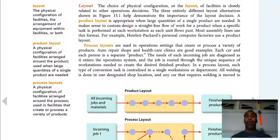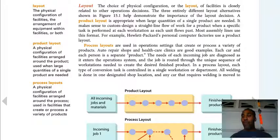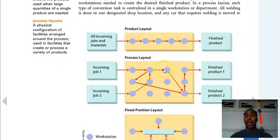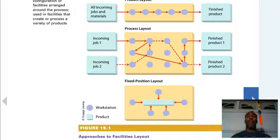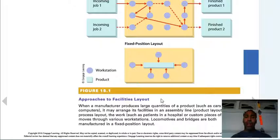A product layout is a physical configuration of facilities arranged around the product, used when large quantities of a single product are needed — for example, producing table after table. A process layout is arranged around the processes used in facilities that create a variety of products. All incoming jobs and materials go through the different steps, then you have your finished product to be sold. Later in the chapter we'll talk about how things flow from raw materials to work in process to completed goods to cost of goods sold.